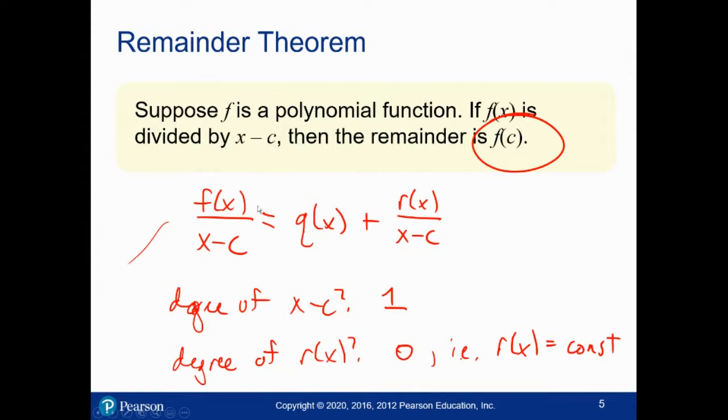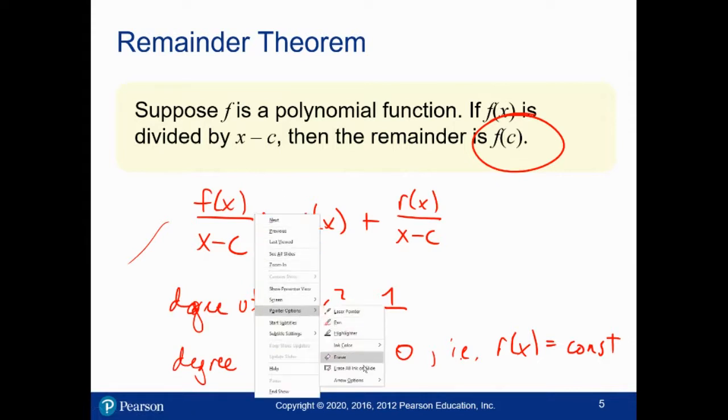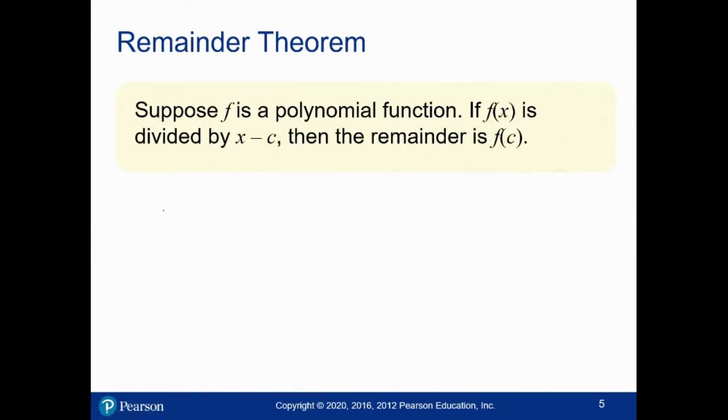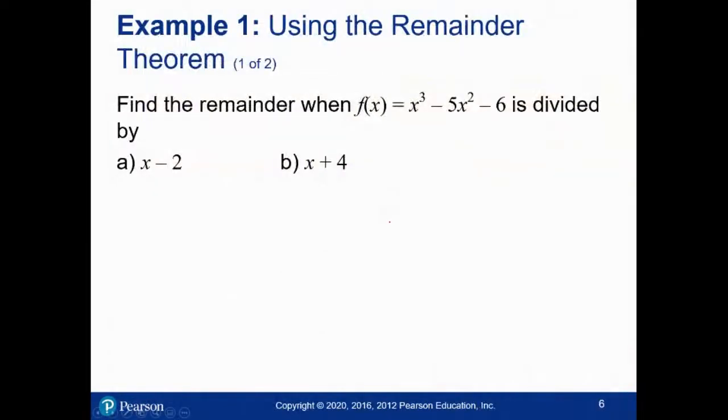So I'm going to clear off my pen marks to restate this. The way this can be restated is f of x over x minus c can be written as another polynomial plus specifically the value f of c over x minus c, where q is some other polynomial. This is the remainder theorem. If you divide by x minus c, your remainder is exactly f of c.